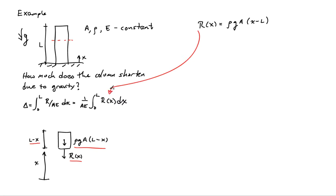Delta then is rho G over E, integral of X minus L, which is easy to compute, just polynomials. And we find out that the change in length of the column is minus rho GL squared over 2E.